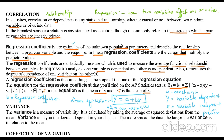The regression coefficients are estimates of unknown population parameters and describe the relationship between the predictor variable x and the response y. One variable is dependent (y) and the other is independent (x). It also measures the degree of dependence of one variable on the other — how y depends on x.